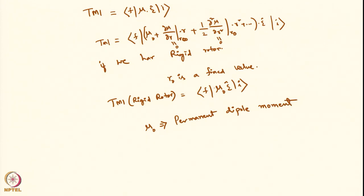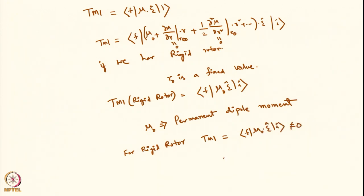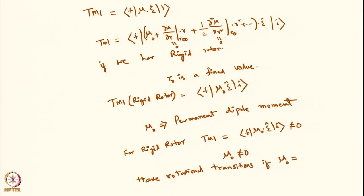For the TMI to be non-zero, μ₀ must be non-zero. This means you can only have rotational transitions if the permanent dipole moment of the molecule is non-zero. For example, a heteronuclear diatomic AB (where A ≠ B) has a permanent dipole moment μ₀ ≠ 0, but a homonuclear diatomic AA has μ₀ = 0.